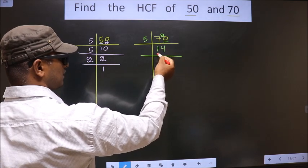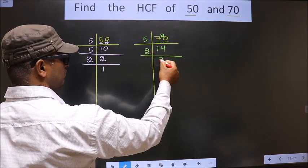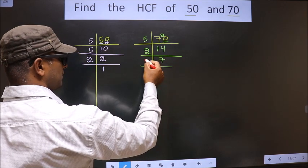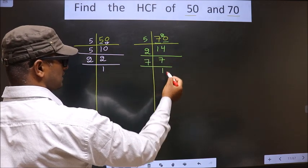Now here we have 14. 14 is nothing but 2 sevens 14. Now 7 is a prime number, so 7 once 7.